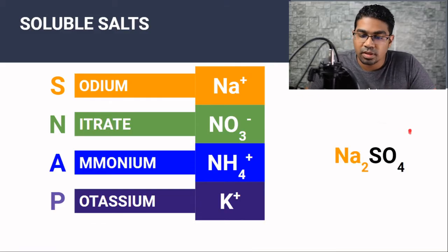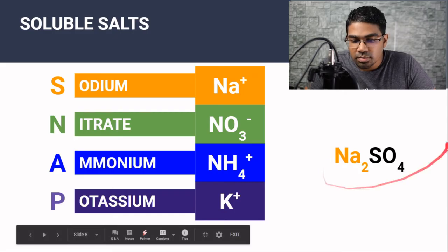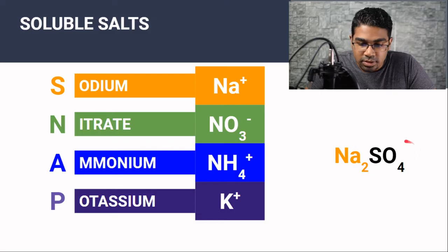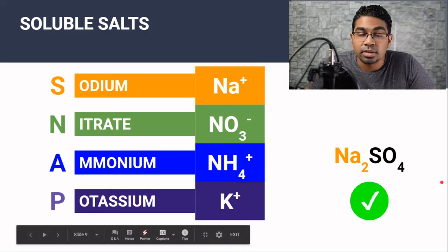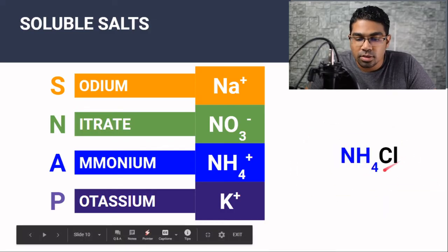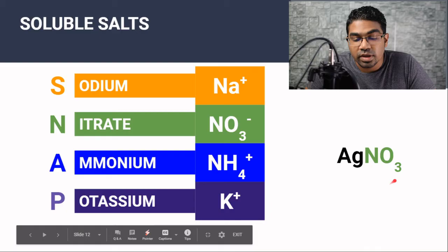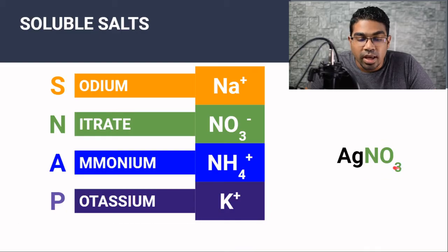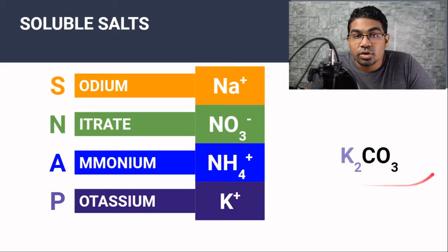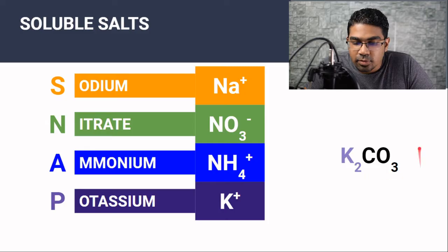For example, sodium sulfate. Sodium sulfate has sodium as the cation — it doesn't matter what the anion is, sodium sulfate will be soluble. Ammonium chloride: as long as ammonium is the cation, it will be a soluble salt. For silver nitrate, we have nitrate as the anion — as long as nitrate is the anion, the salt will be soluble. Same goes for potassium carbonate: if potassium is the cation, it doesn't matter what the anion is, it will be soluble.